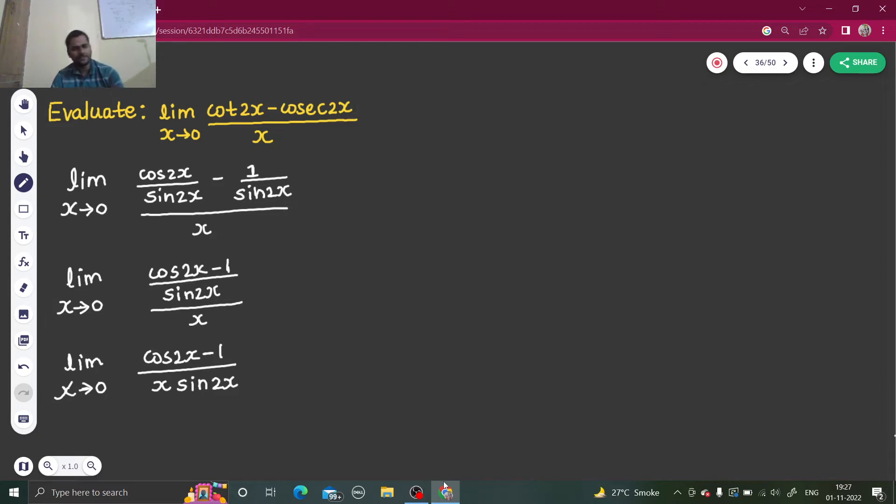Now how can we further simplify cos 2x minus 1? We don't know, but we know the formula for 1 minus cos 2x. That is nothing but 2 sine squared x.